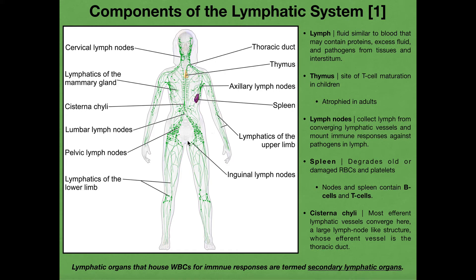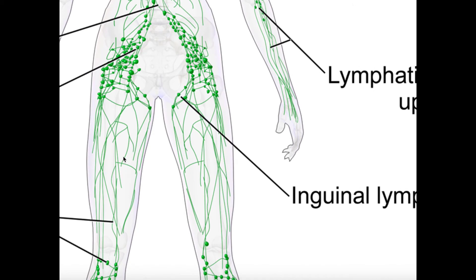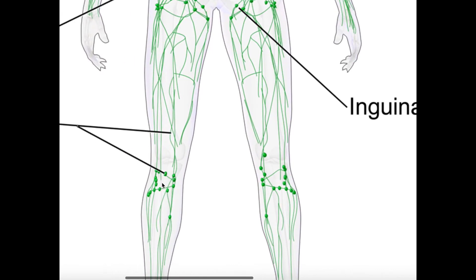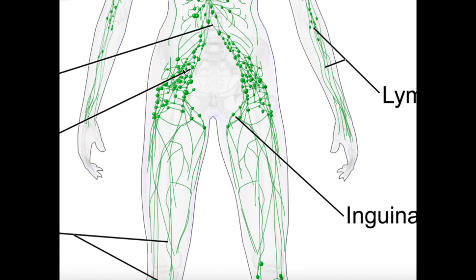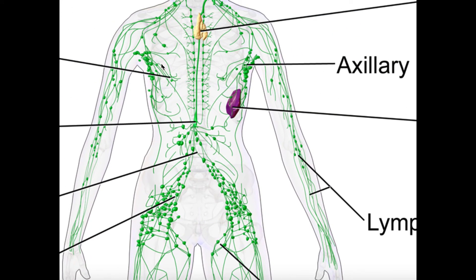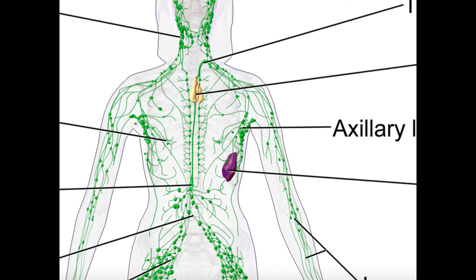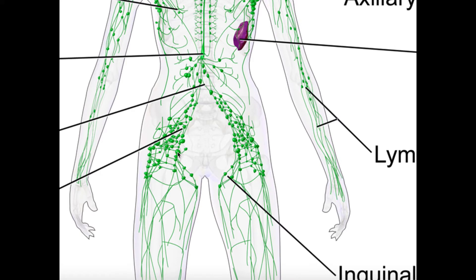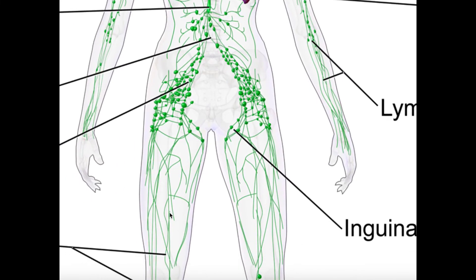If we zoom in and look at one of these legs, we can follow any one of these lymphatic vessels upward, and eventually they're going to converge at round structures we see throughout the body. They tend to be clustered in certain areas — popliteal ones around the knee region, inguinal ones in the groin, some in the axillary regions, and some in the cervical regions up here. These are called lymph nodes. The fluid moving in these lymphatic vessels will eventually make its way to a lymph node.